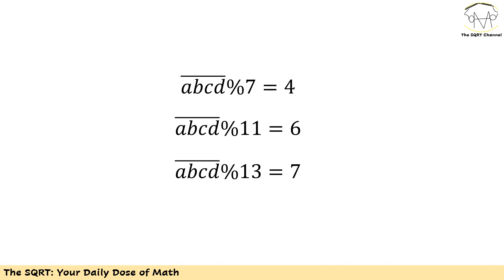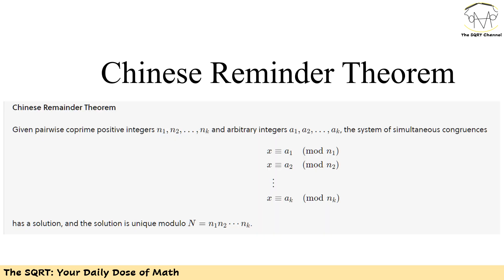Now we have these three equations: the remainder of the four-digit number when divided by 7, 11, and 13. We are going to use these to find the number itself. To solve this I'm going to use the Chinese Remainder Theorem. Let's assume we have pairwise co-prime positive integers n1, n2, up to nk, and arbitrary integers a1 up to ak. This system of equations is going to have a unique solution modulo n, which equals the product of all n1 times n2 up to nk.